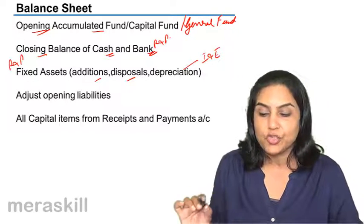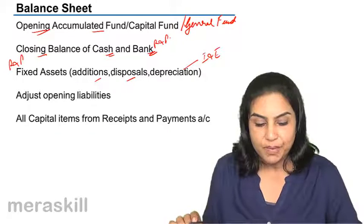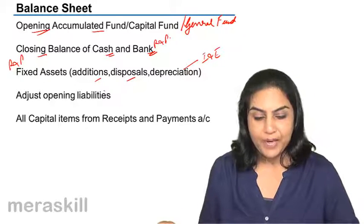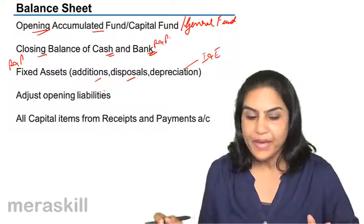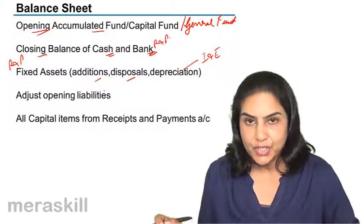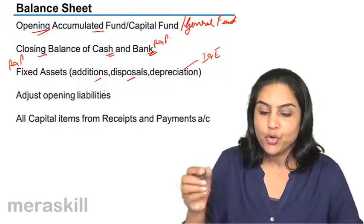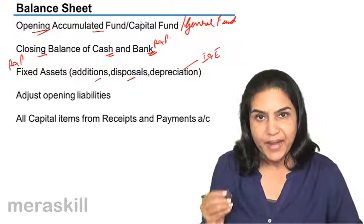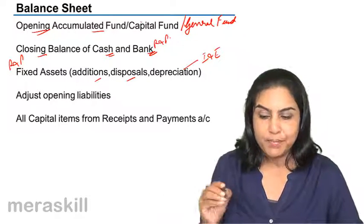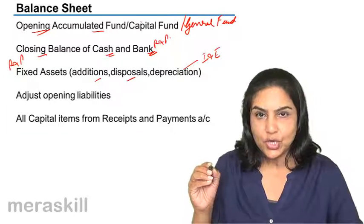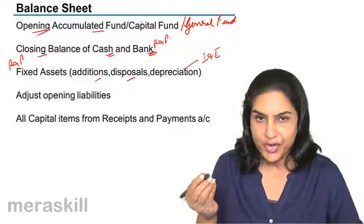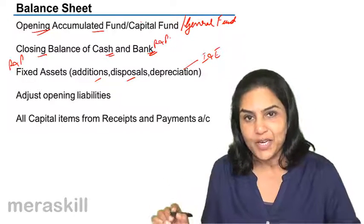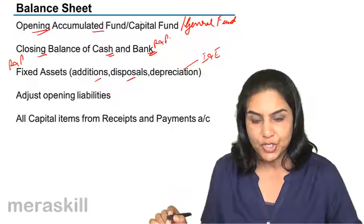Assets — additions and disposals — come from the receipts and payments account. We then adjust the opening liabilities. In the opening balance sheet, we have the opening accumulated fund, to which the surplus is added or the deficit is subtracted, which we get from the income and expenditure account.